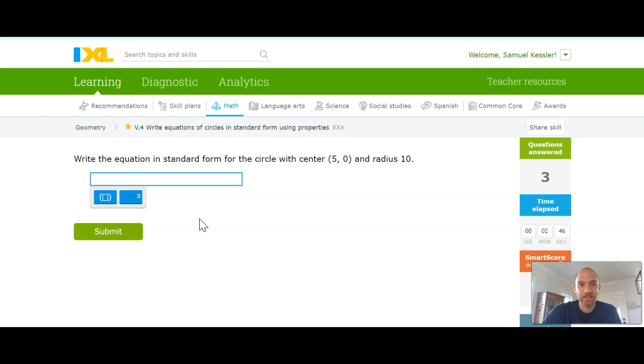You might want to look at that video after this or before this, but it's just going to be x minus the x value. So that's going to be parenthesis x minus the 5 that gets squared plus parenthesis y minus the y value.